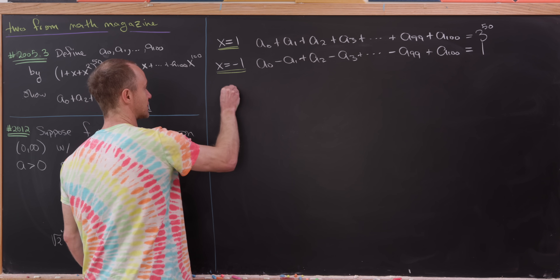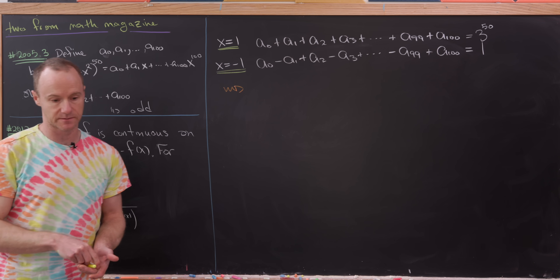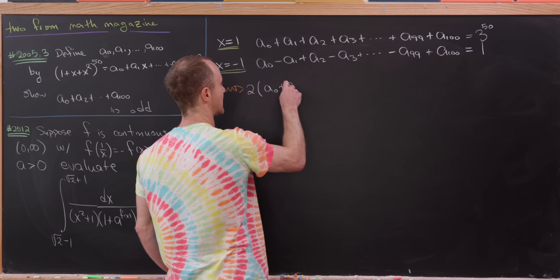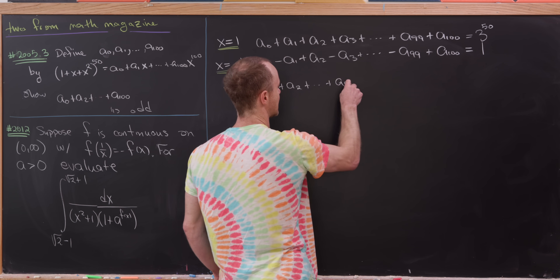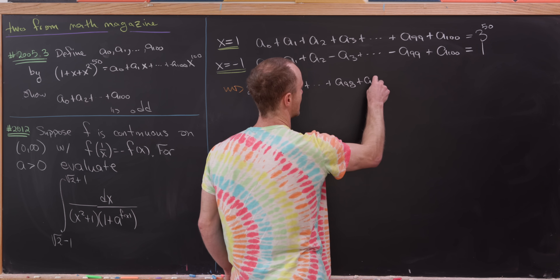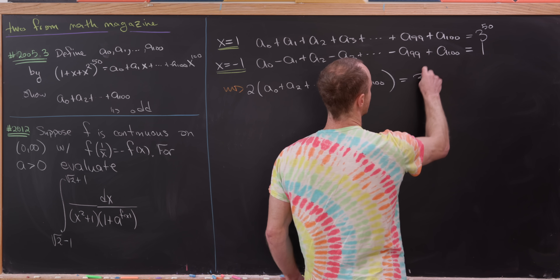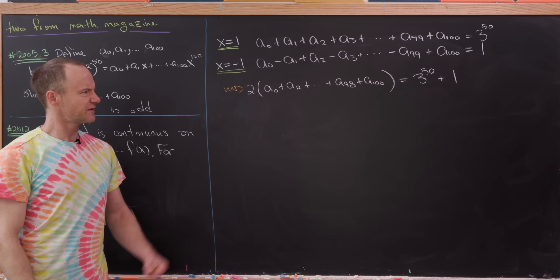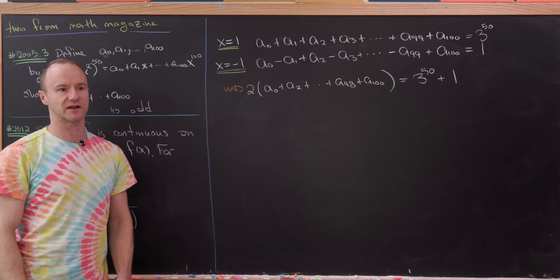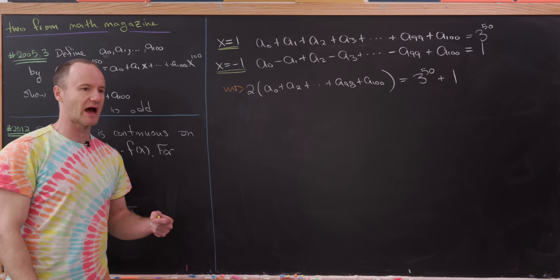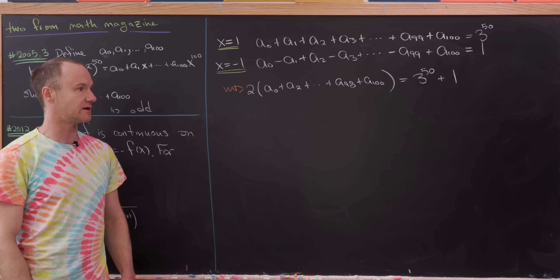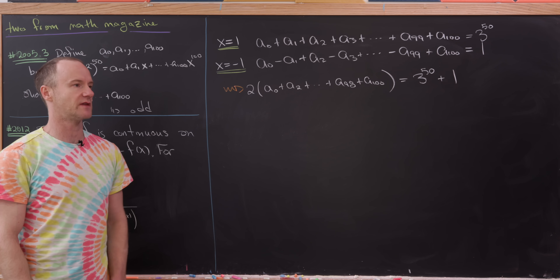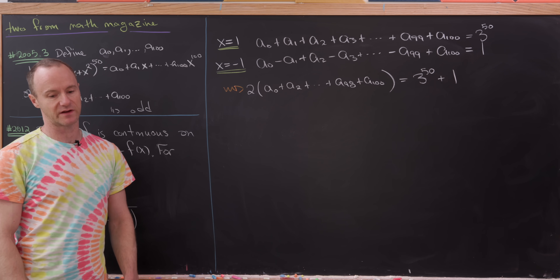We add the two equations so that all the odd terms cancel. We get 2·(a0 + a2 + ... + a98 + a100) = 3^50 + 1. Now, 3^50 + 1 is most definitely even because 3^50 is odd — add 1 and you get something even. So we can divide by 2 and get a whole number. We just need to confirm we get an odd number when dividing by 2.